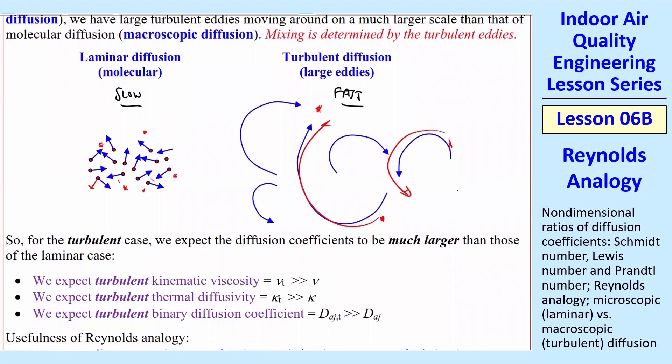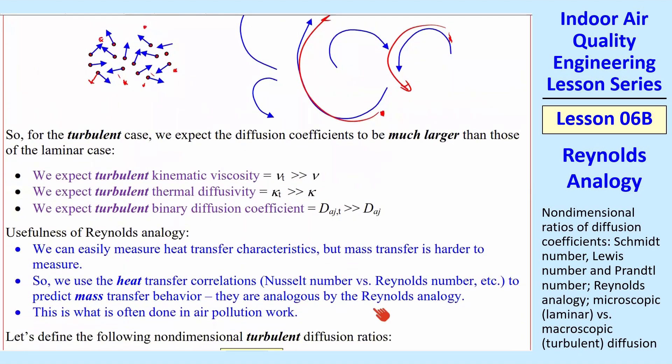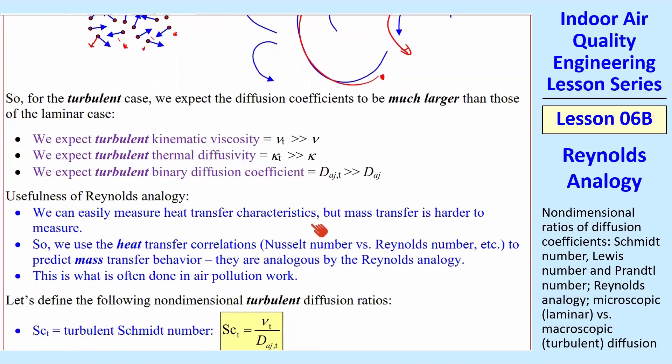We can say then that the turbulent kinematic viscosity, nu sub T, is much greater than nu, the laminar one. Similarly, thermal diffusivity, kappa T, is much greater than kappa laminar, and then turbulent DAJ, much greater than DAJ. So what the Reynolds analogy says is that we can easily measure heat transfer characteristics, but since it's harder to measure mass transfer, we can use these heat transfer correlations, Nusselt number, Reynolds numbers, et cetera, to predict mass transfer behavior, and they're analogous by Reynolds analogy.